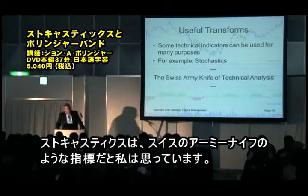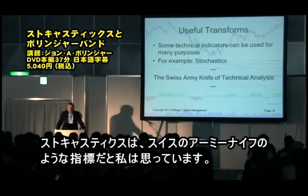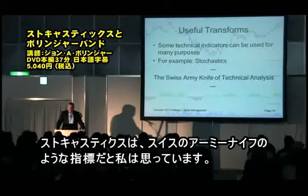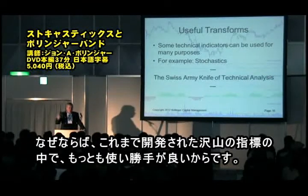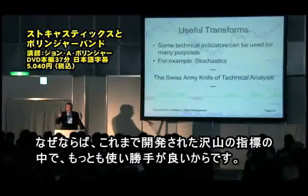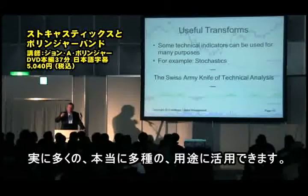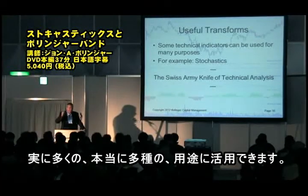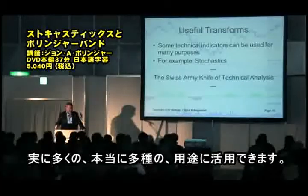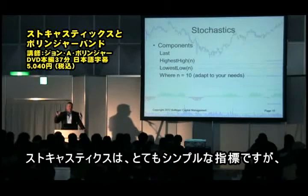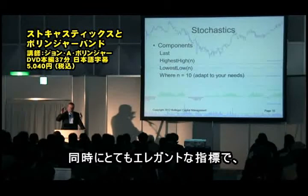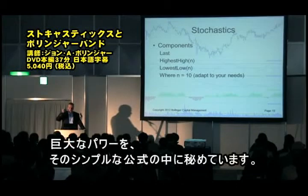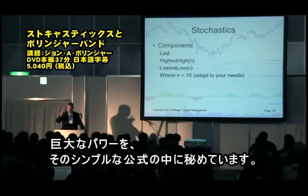I call Stochastics the Swiss Army knife of indicators because it is the most useful indicator I think that has ever been created. It can be used for many, many different purposes. Stochastics is a very simple indicator, but it is a very elegant indicator. It contains a tremendous amount of power in a very simple formula.